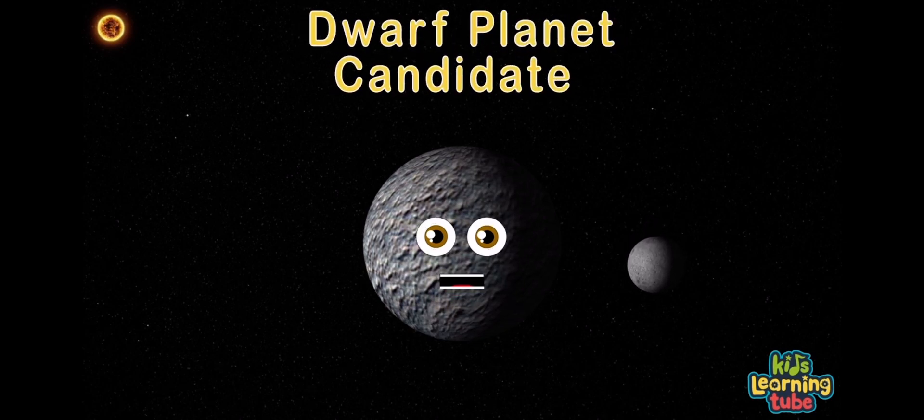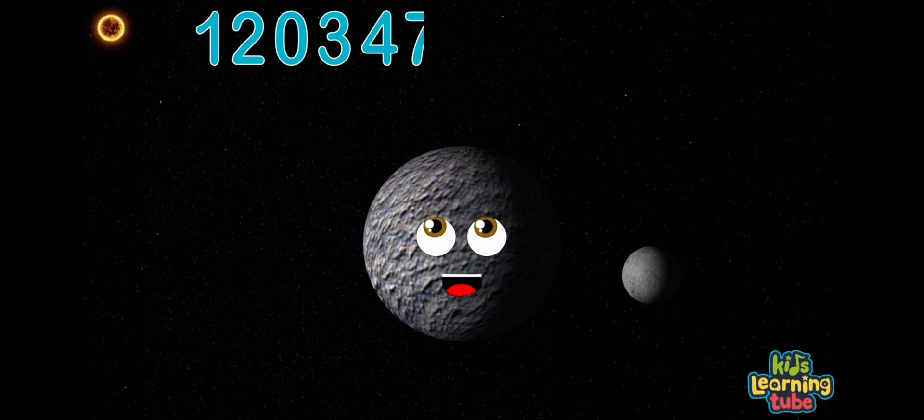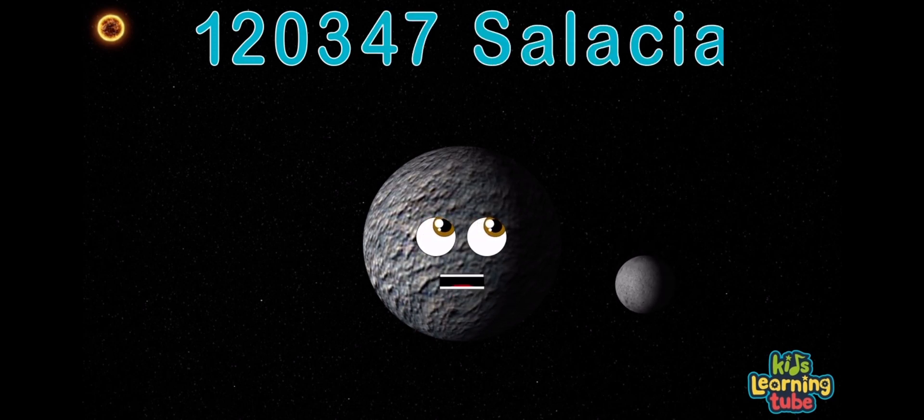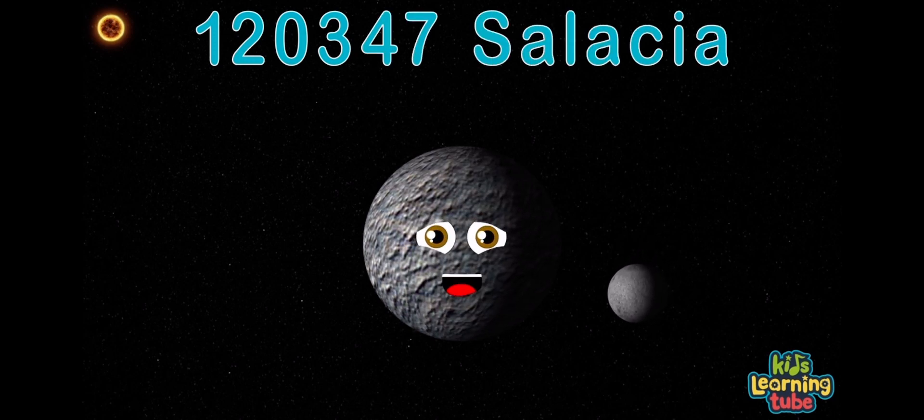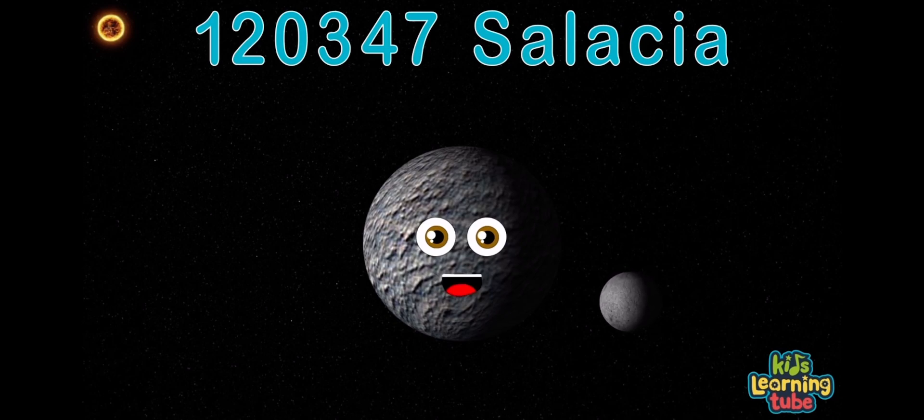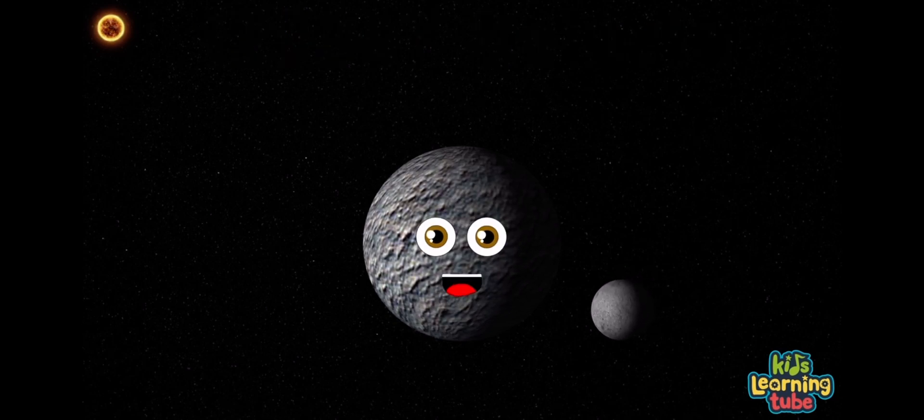120,347 Salacia, I'm a trans-Neptunian object, it's real nice to meet ya. My provisional designation is 2004 SB60. Listen to my song if you want to learn more about me.